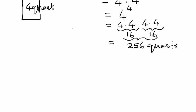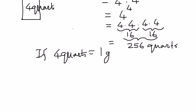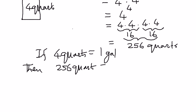We know that if four quarts is equal to one gallon of milk, then two hundred and fifty-six quarts is equal to how many gallons? We take two hundred and fifty-six and divide it by four, and we come up with sixty-four gallons.